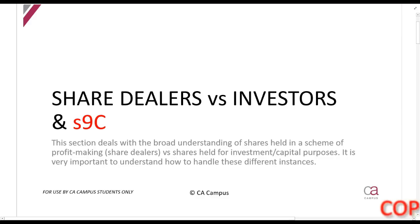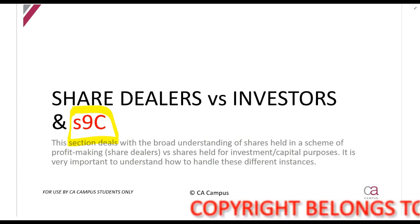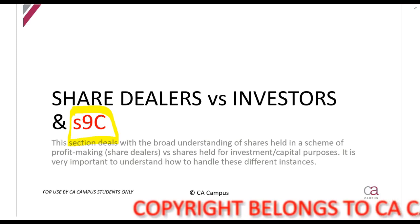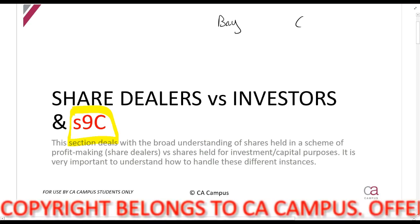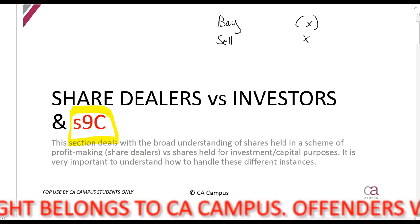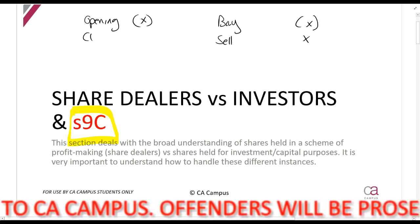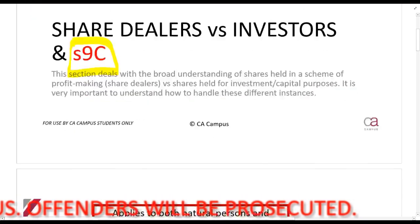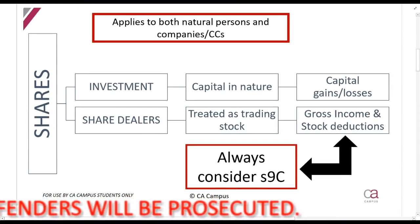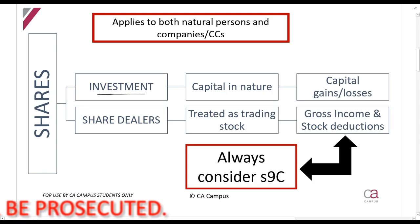In this section we look at Section 9C, which deals with share dealers. A share dealer is a person who buys and sells shares in other companies as trading stock. When you buy shares you can claim a deduction, and when you sell them it will be gross income. If you hold shares as an investment, it's not in the scheme of profit-making, so it's capital in nature and we calculate capital gains and losses as usual.